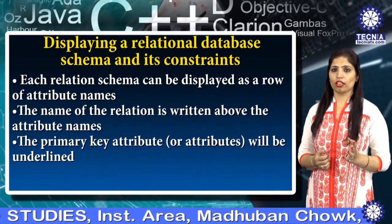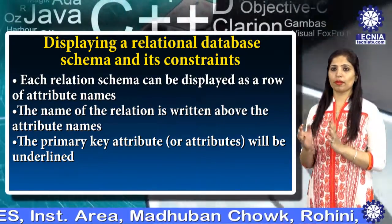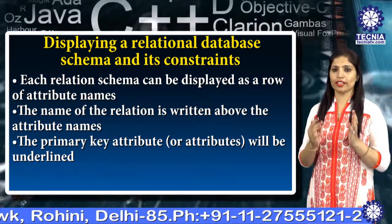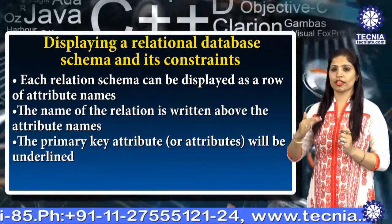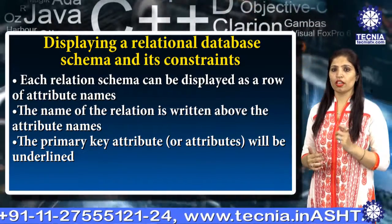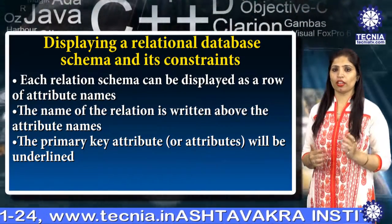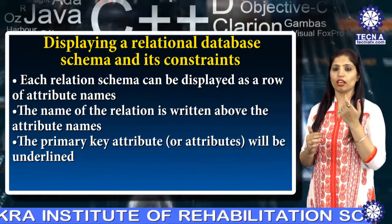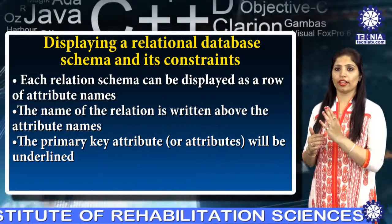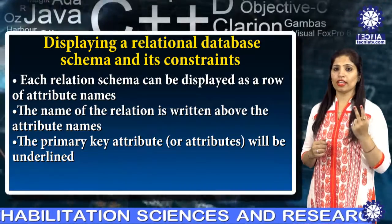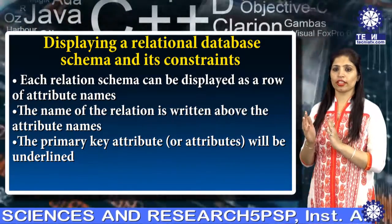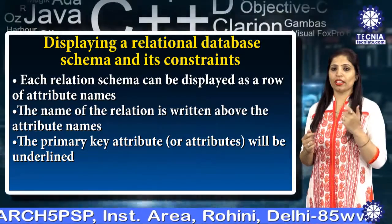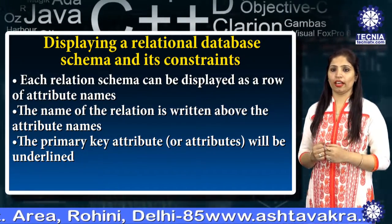In the relational data model, to display a relational database schema and its constraints, we must follow some set of rules. Each relation schema can be displayed as a row of attribute names. The name of the relation is written above the attribute name, and the primary key attribute will be underlined.